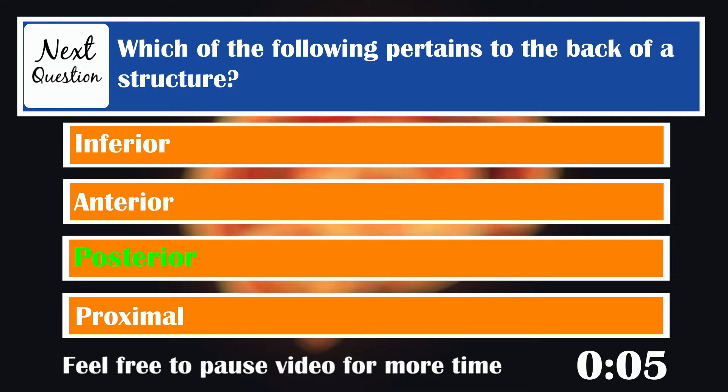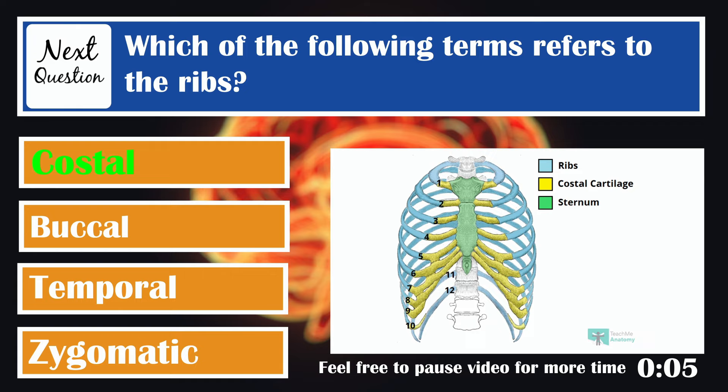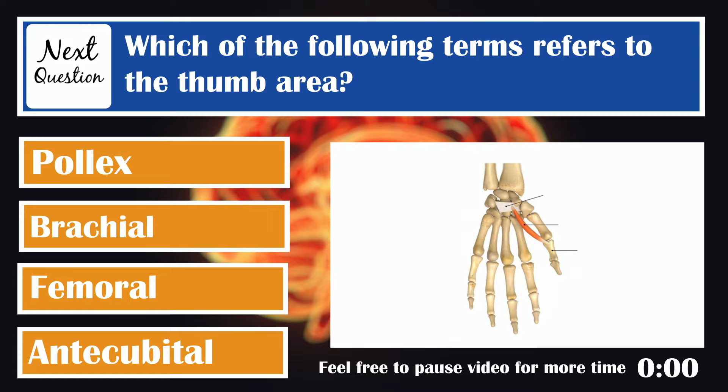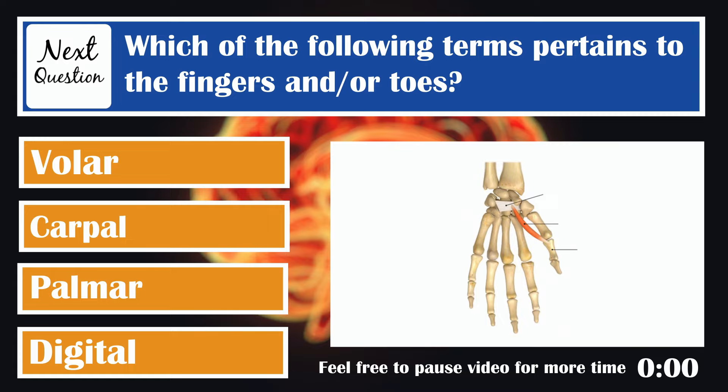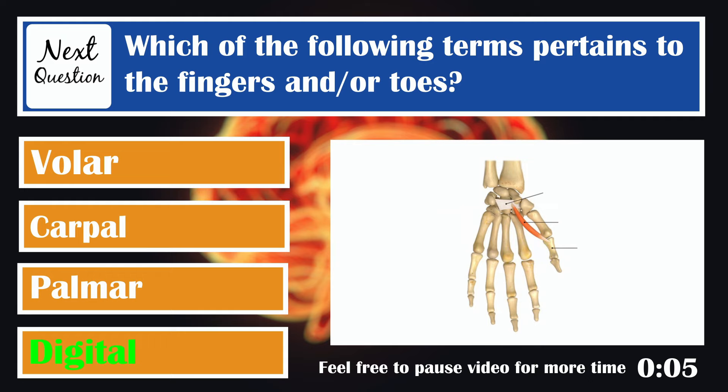Which of the following terms refers to the ribs? Costal. Which of the following terms refers to the thumb area? Pollex — the big toe. Which of the following terms pertains to the fingers and or the toes? Digital. Your fingers and toes are your digits.